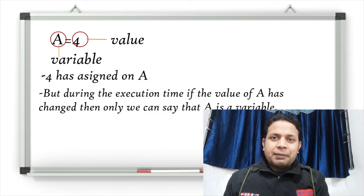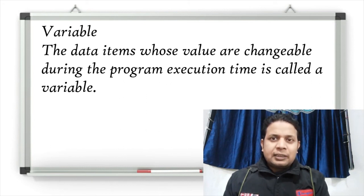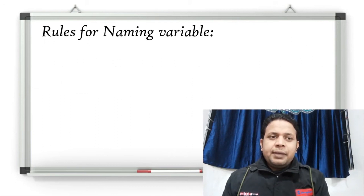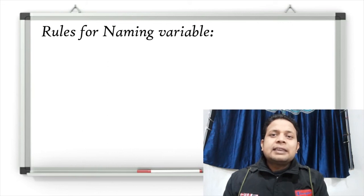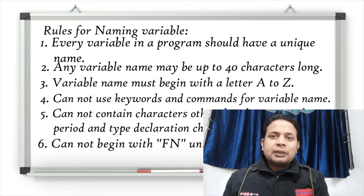So the clear definition is: a data item whose value is changeable during program execution time is called a variable. I hope that is clear. Now in variable, we will first read the naming rules — the rules for naming variables. You cannot write anything other than what the rules allow, so you must follow the rules to choose the name of a variable. Here you can see some points explaining how to name a variable.